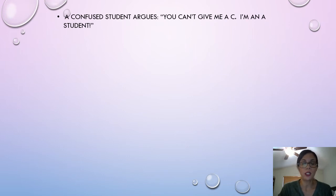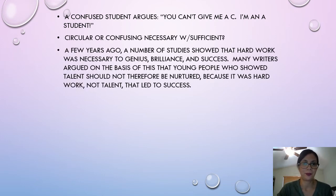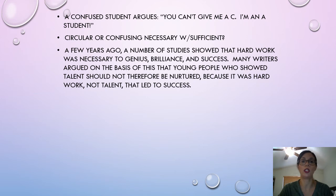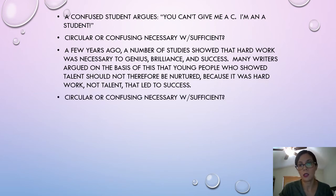Example one: a confused student argues, 'You can't give me a C — I'm an A student.' They didn't get into any specifics or rationale for why their work was an A, so it's circular. Next example: studies showed hard work was necessary to genius, brilliance, and success. Some writers argued that talented young people should not be nurtured because it's hard work, not talent, that leads to success. Is hard work necessary? Of course. Is it alone sufficient? No — it also takes talent and sometimes luck. This confuses necessary with sufficient.